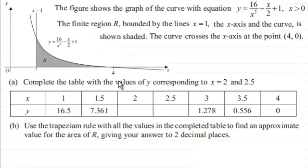What we've got to do is complete the table with values of y corresponding to x equals 2 and 2.5. And then go on to use the trapezium rule with all the values in the completed table to find an approximate value for the area of R, giving our answer to two decimal places.